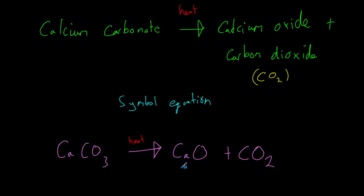We produce calcium oxide — which is one calcium and one oxygen — plus CO₂, which is one carbon and two oxygens. It's important to note that we are not saying that in a test tube one atom of calcium, one atom of carbon, and three atoms of oxygen are reacting. This is the simplest ratio, and that is why we put these numbers next to the reactants and products.